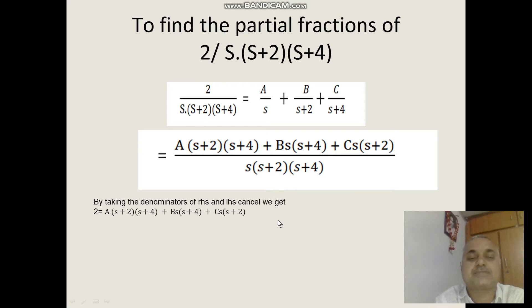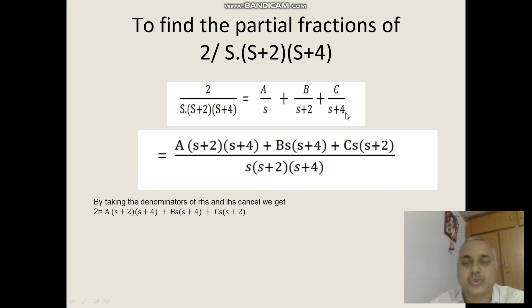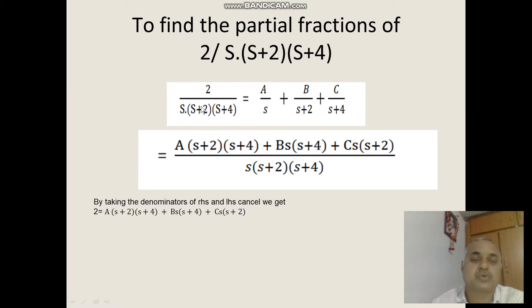So 2 by s into s plus 2 into s plus 4 is equal to A by s plus B by s plus 2 plus C by s plus 4. Multiplying through, we get A into s plus 2 into s plus 4 plus B into s into s plus 4 plus C into s into s plus 2. Since denominators cancel, the numerators must be equal, so 2 is equal to A into s plus 2 into s plus 4 plus B into s into s plus 4 plus C into s into s plus 2.